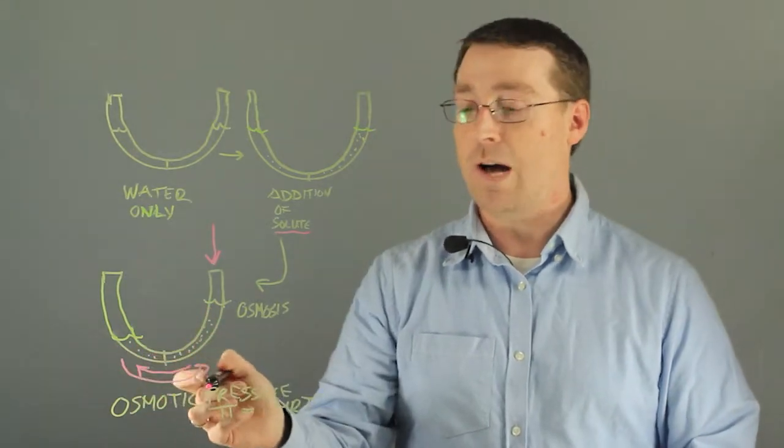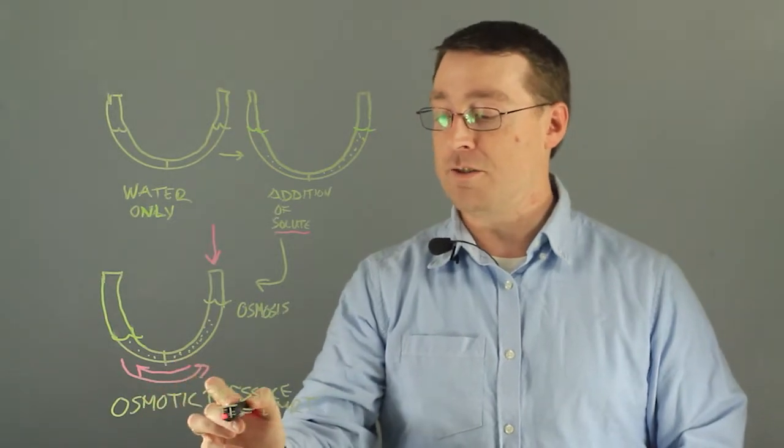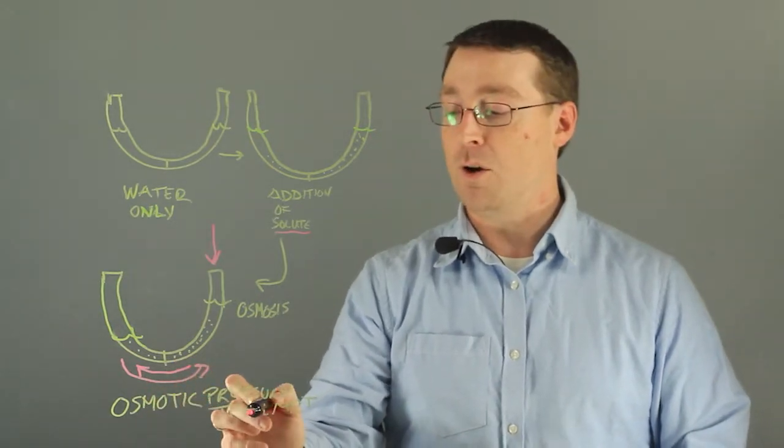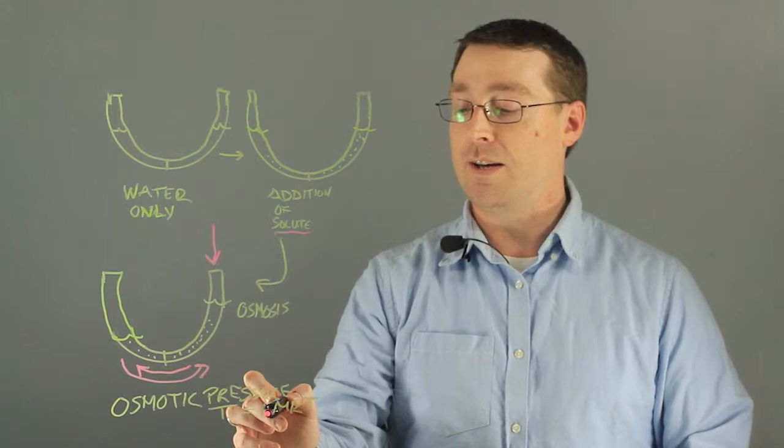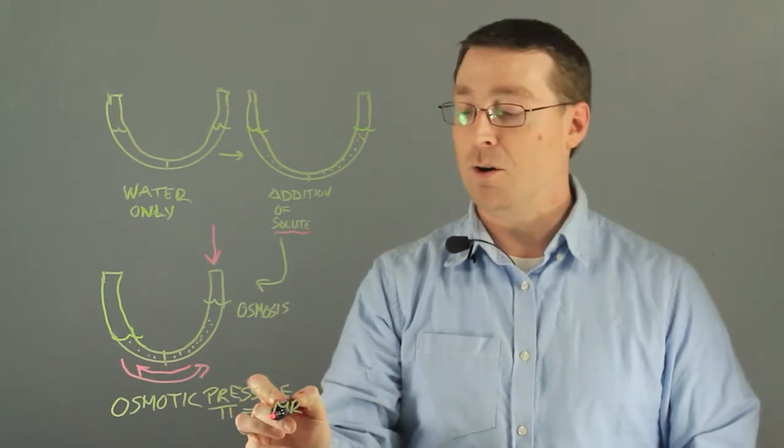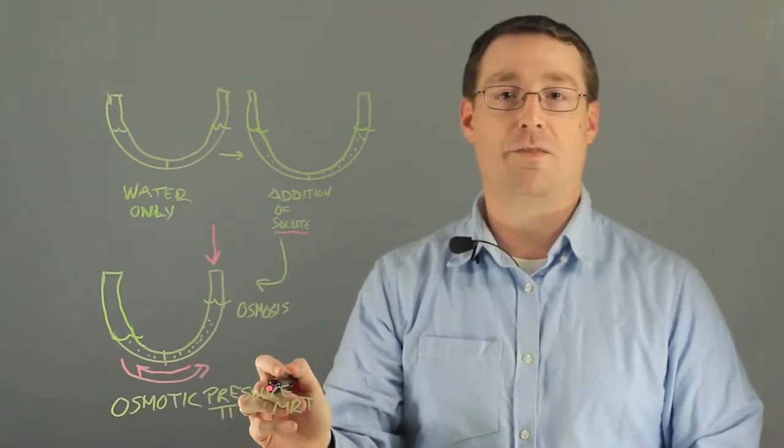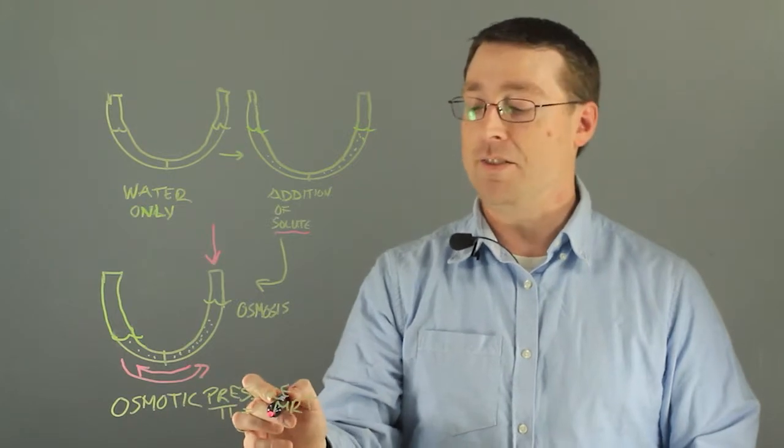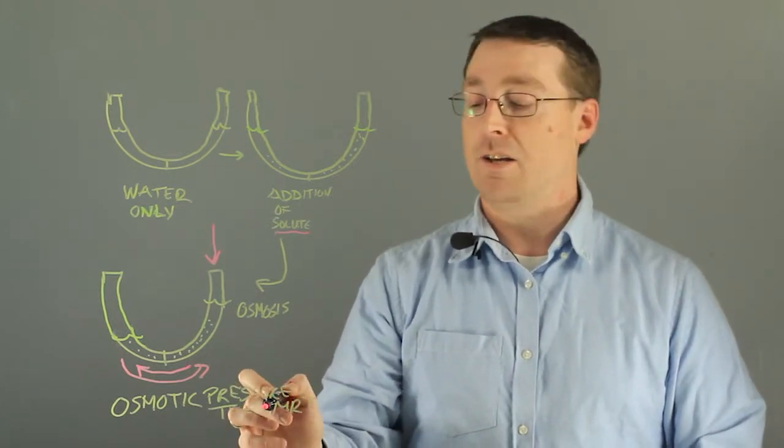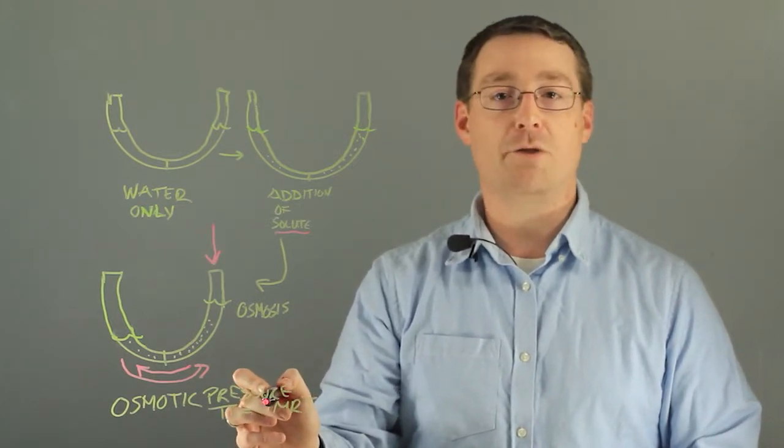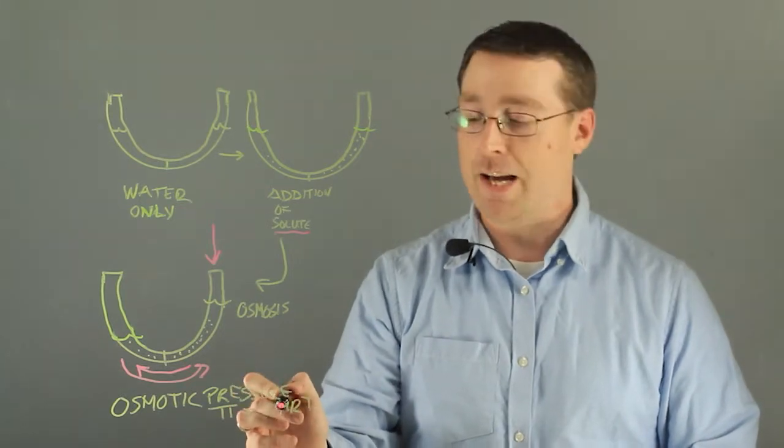So how do we calculate osmotic pressure? The equation for osmotic pressure is shown here where it equals iMRT where i is the Van't Hoff constant and this is a measure of the concentration of the solute in solution compared to what it's calculated as.